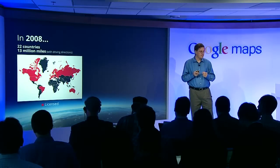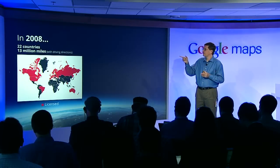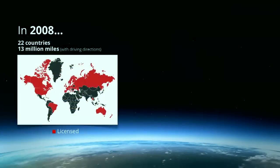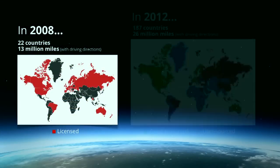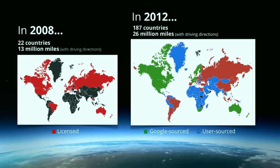To wrap up comprehensiveness: in 2008, we had 22 countries and 13 million miles that were navigable or had driving directions, all based on licensed data. Today, we have 187 countries and 26 million miles — double — that are navigable. We also have 29 countries with turn-by-turn voice-guided driving directions, all possible because of Google-sourced and user-sourced imagery. The coverage and quality continue to improve. We are certainly not done, but we're continuing to work on it.